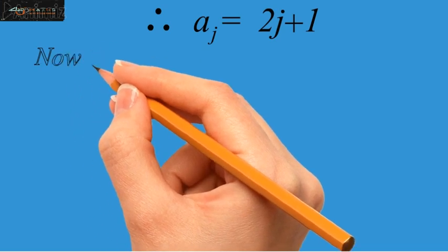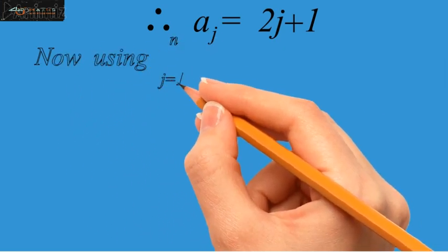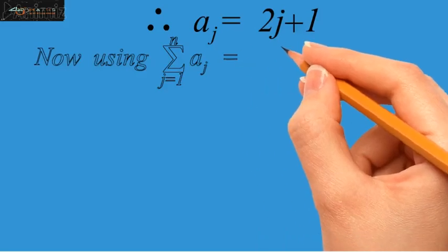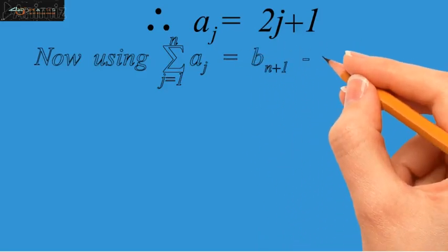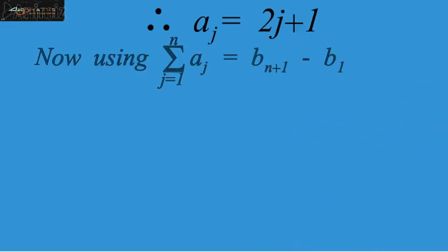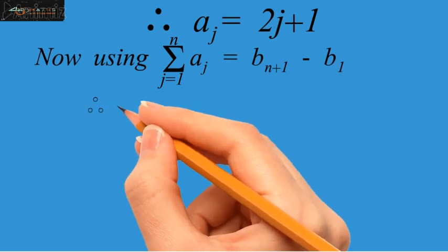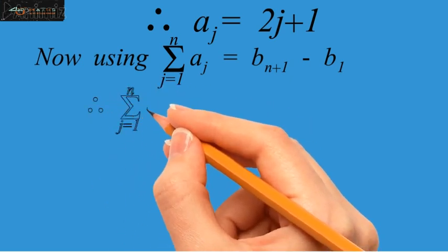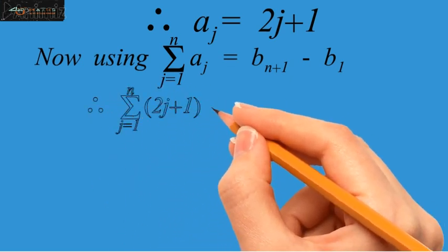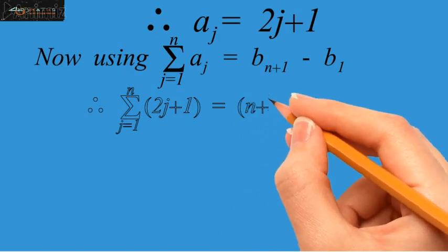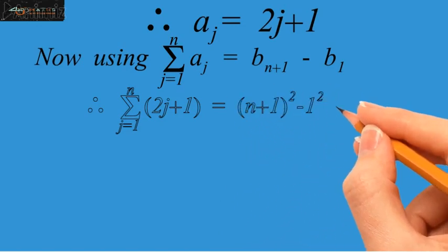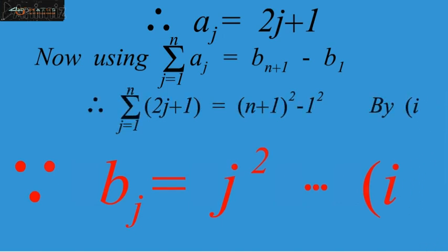Now, using the formula we have just obtained, that is summation j equals 1 up to n, aj equals bn plus 1 minus b1, therefore, summation j equals 1 up to n, 2j plus 1 is equal to n plus 1 whole squared minus 1 squared. And this is because of relation 1.